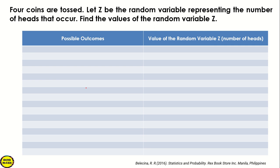Find the values of the random variable Z. First, in order to find the values of the random variable Z, we need to identify what are the possible outcomes.